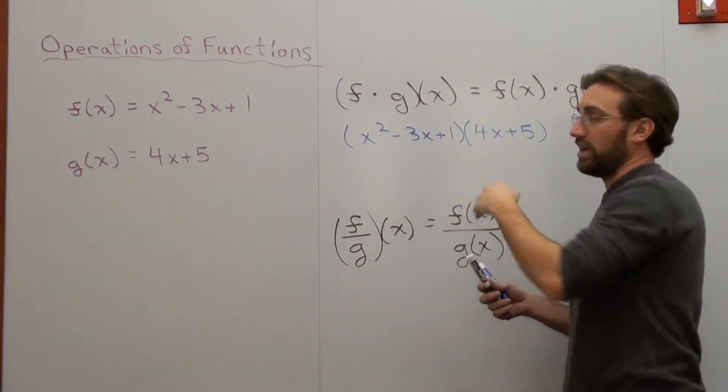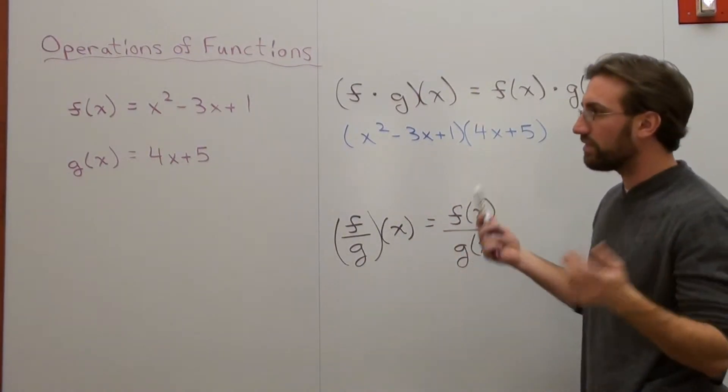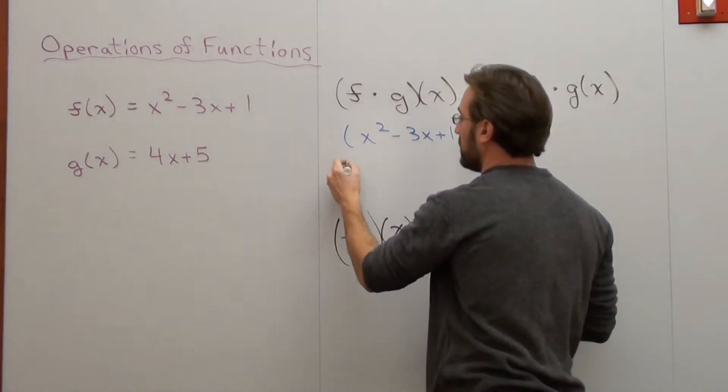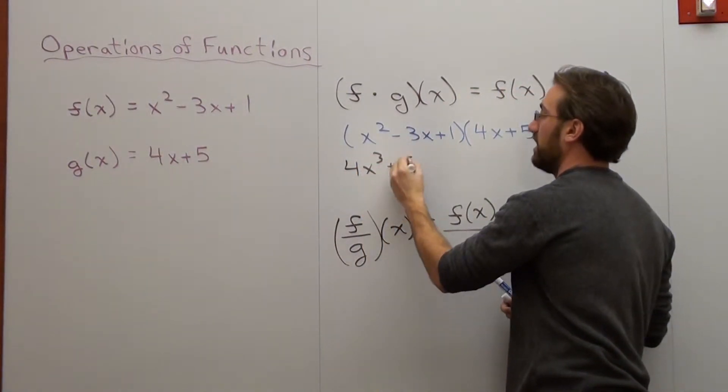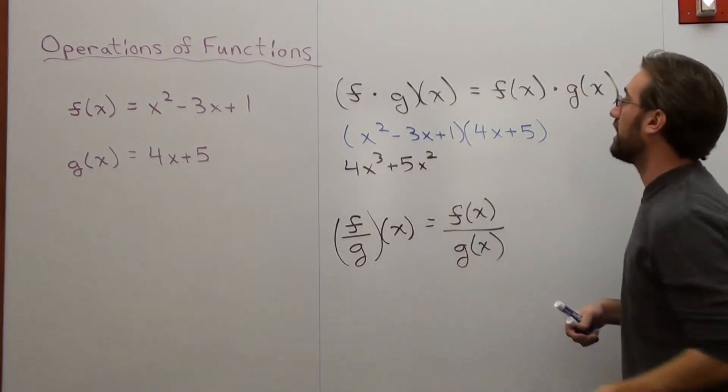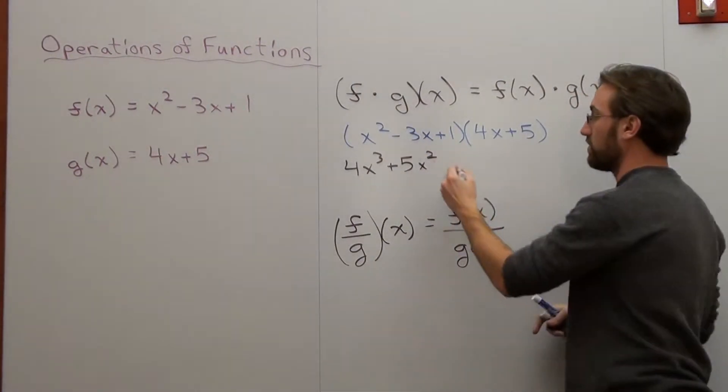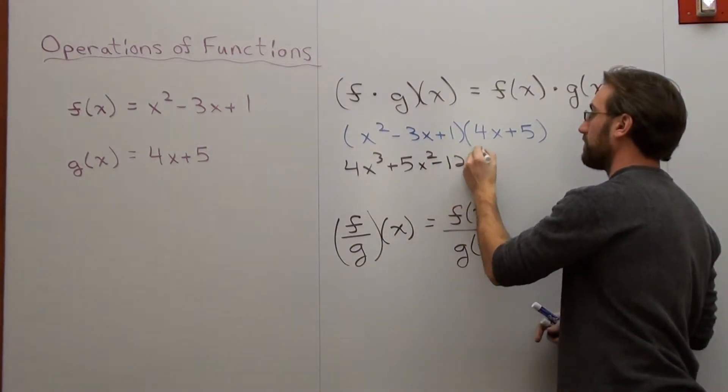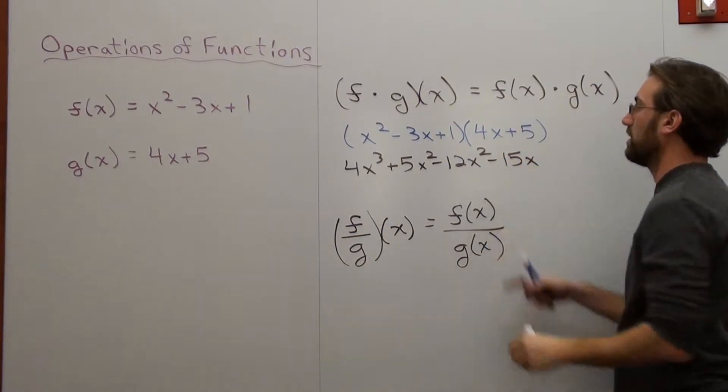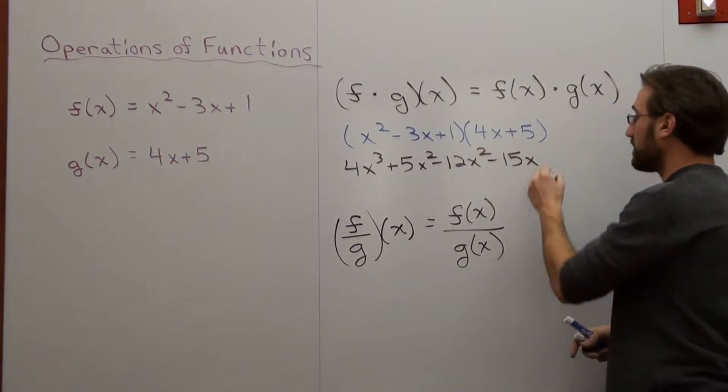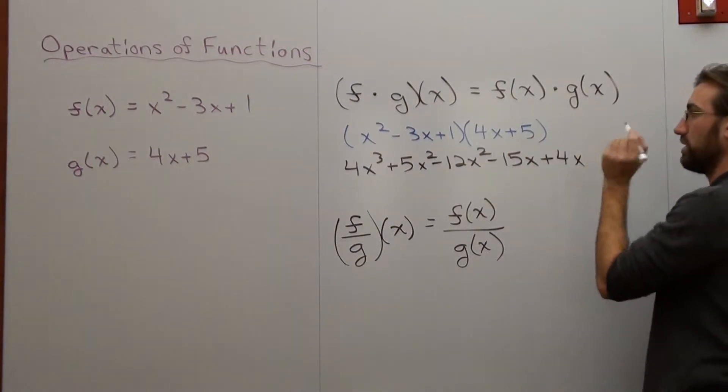Every time I do that, I just make sure I distribute properly. Some people call it FOIL—I wouldn't call this one FOIL, but if you want to, it's fine. x squared times 4x is 4x cubed. x squared times 5 is 5x squared. Negative 3x times 4x is negative 12x squared. Negative 3 times 5 is negative 15x. 1 times 4x is 4x, and 1 times 5 is 5.